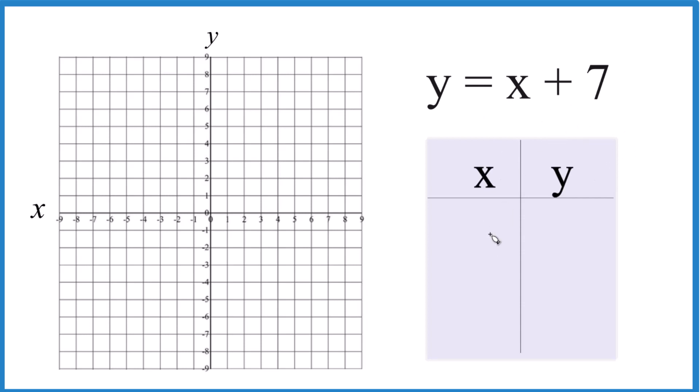So we start out by putting values in for x, then we figure out what y will be. I like to start with 0. So if x is 0, 0 plus 7, well that's just 7. 1 is always a good one to put in here, so we'll put 1. x is 1, 1 plus 7 is 8.